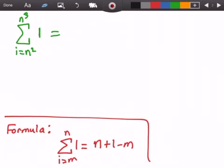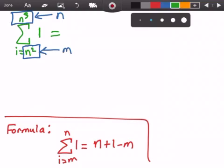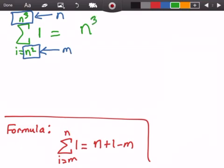Let me just make that very obvious here. So here we have n cubed and this will be plugged in for n into our formula. And then here we have n squared and this will be plugged into m for our formula. So now we get n cubed plus 1 minus n squared.